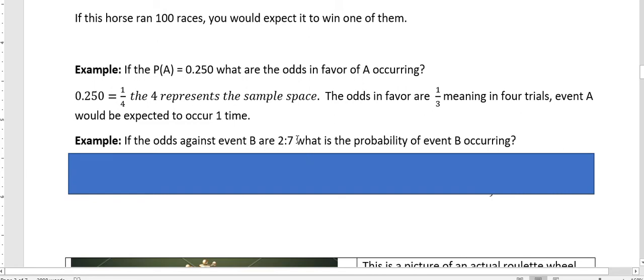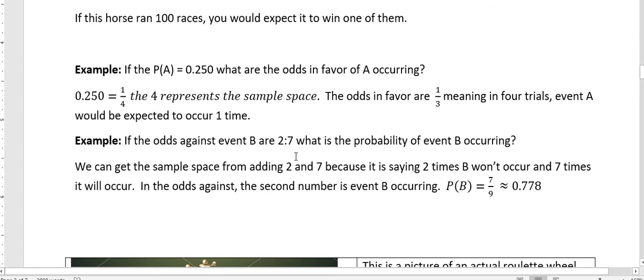And to get that, we can add the 2 and the 7 together to get 9. And then once we know what our sample space is, we can take our, that's 9. And we say our favorable events were 7. So 7 out of 9, which is 0.778.